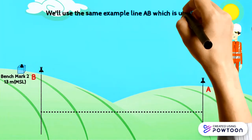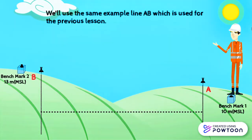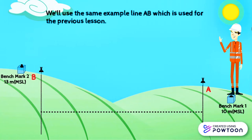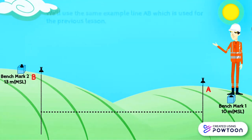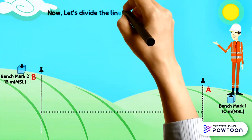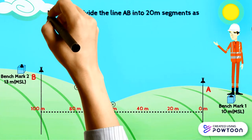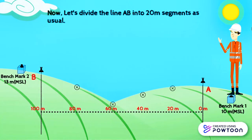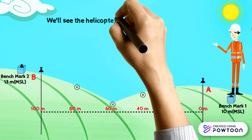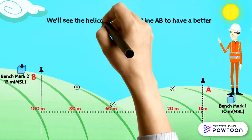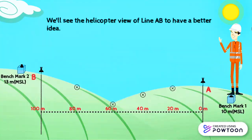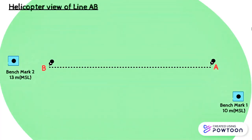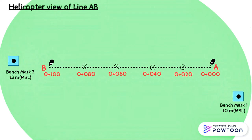We'll use the same example line A-B which was used for the previous lesson. Now let's divide the line A-B into 20-meter segments. As usual, we will see the helicopter view of line A-B to have a better understanding. In the helicopter view, we can divide line A-B into 20-meter segments as follows.